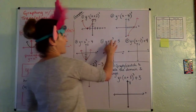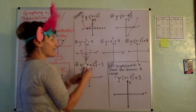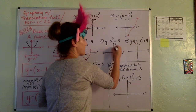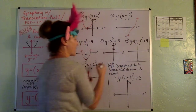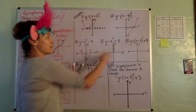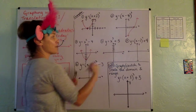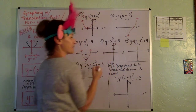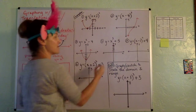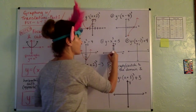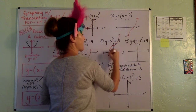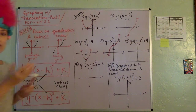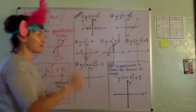Next one: x to the third plus 5. There are no parentheses here, so this plus 5 on the end is a vertical shift. We're going to shift the whole thing up to 5. No horizontal shift. We just sketch in the cubic shifted up 5.